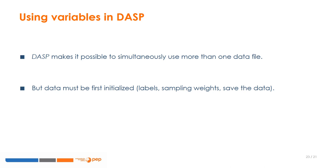Such initialisation is done by labelling variables and values for categorical variables, defining the sampling design with the command 'svyset', and saving the initialised data file. It is useful to add a character such as 'i' to the name of initialised files — for example, 'uganda99i.dta' — in order to distinguish them.